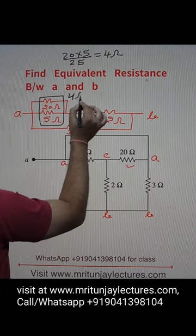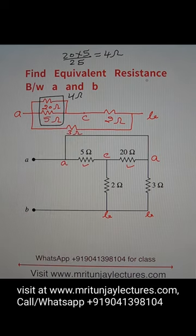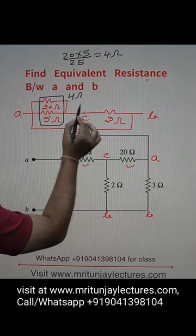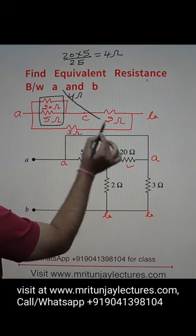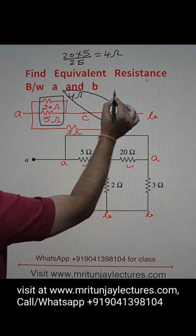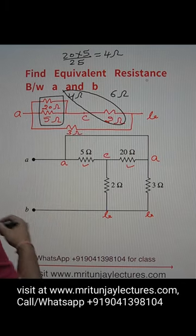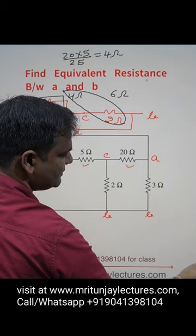4 ohm and 2 ohm both are series. These two are in series. So combination of these two, how much? 6 ohm. 6 ohm and 3 ohm, both these two...